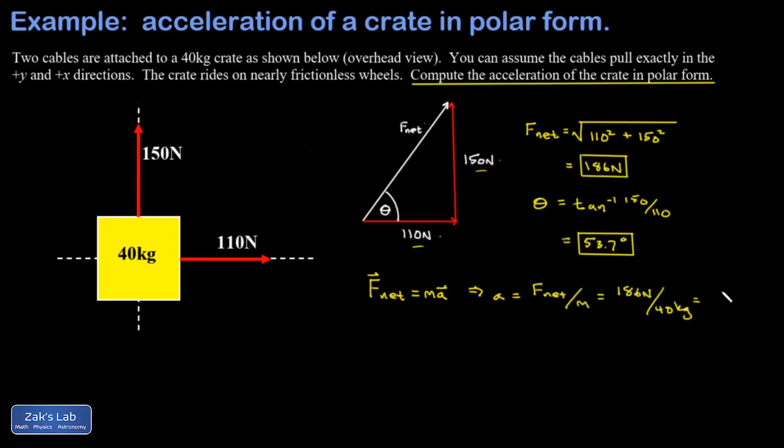When I run the numbers, I get 4.65 meters per second squared. That wraps up the problem. We have an acceleration with a magnitude of 4.65 meters per second squared and the direction is 53.7 degrees above the positive x-axis. When I give the magnitude and direction of a vector, that's the polar form, so there's our answer.